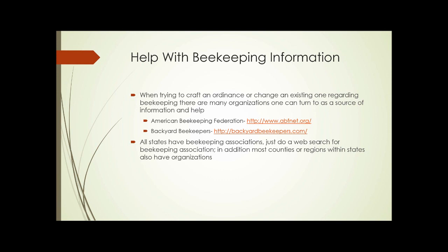If you need help crafting an ordinance or changing an existing one, there are organizations to turn to. First would probably be the American Beekeeping Federation. Also, Backyard Beekeepers — they will have information about other ordinances and things that have been enacted and can give suggestions. Every state has beekeeping associations, so you can do a web search for beekeeping association and the name of the state. Most counties or regions also have local organizations. Once you locate a beekeeping organization, they can direct you to someone who can help with information and education.